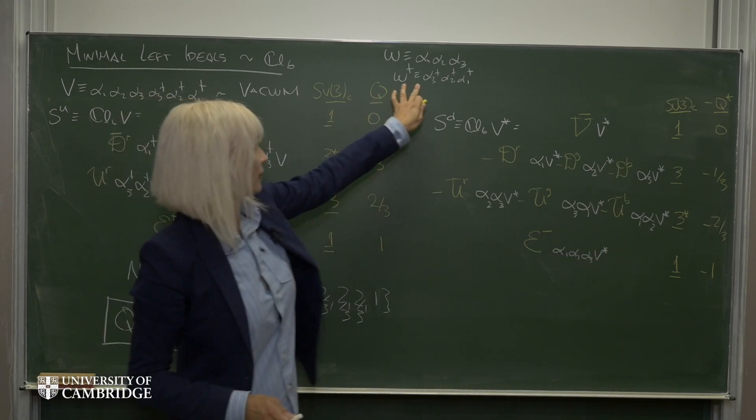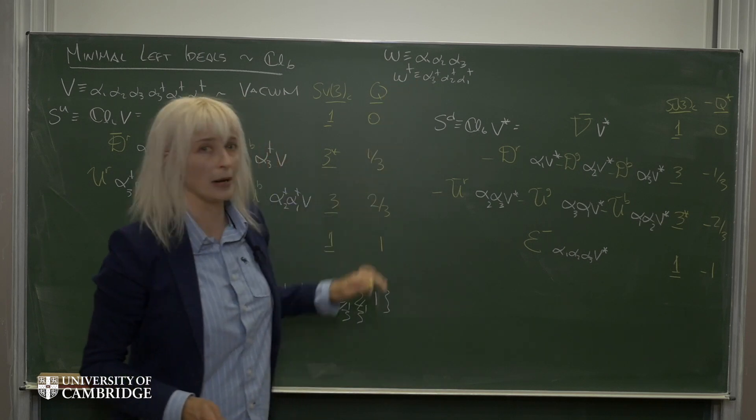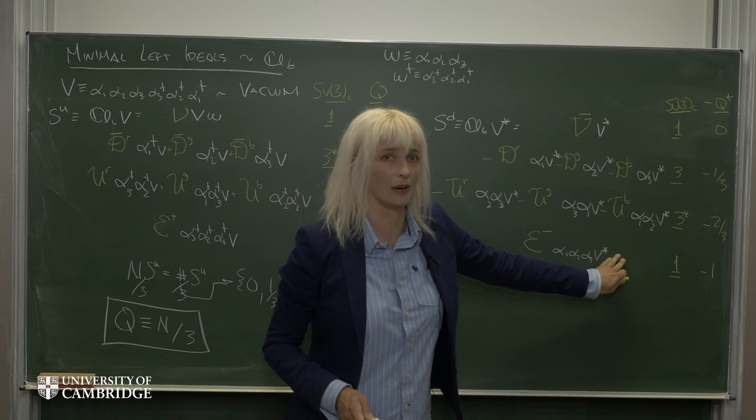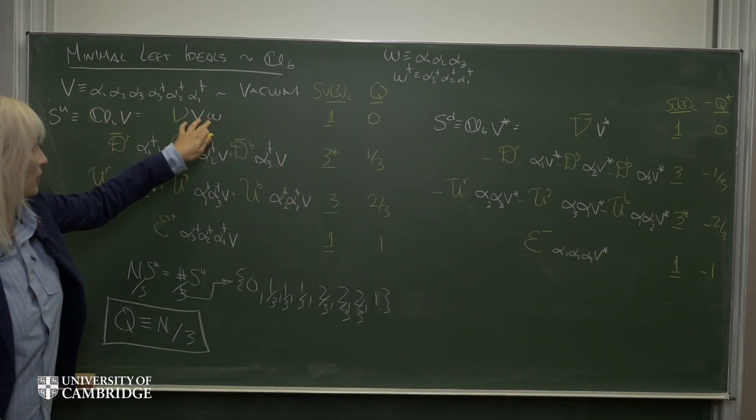And similarly, if I take omega-dagger and right-multiply objects on this side, for example the electron, if I right-multiply this by omega-dagger, it would take me back to the basis vector of the neutrino.